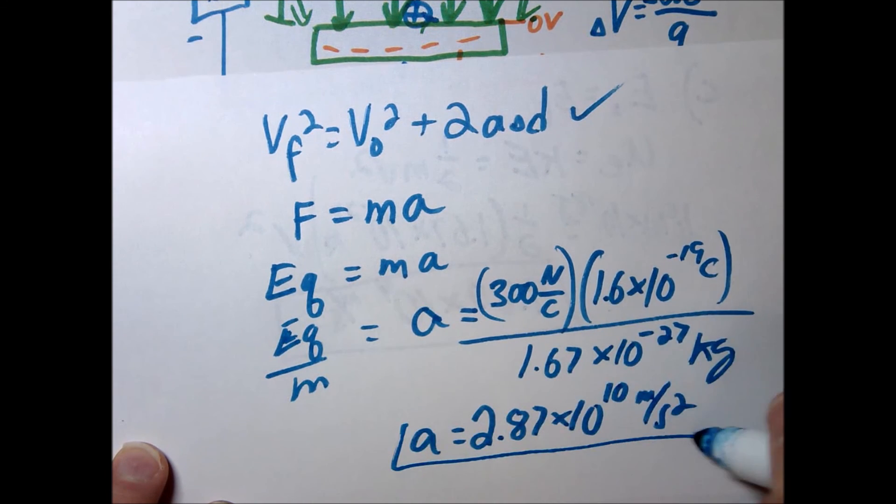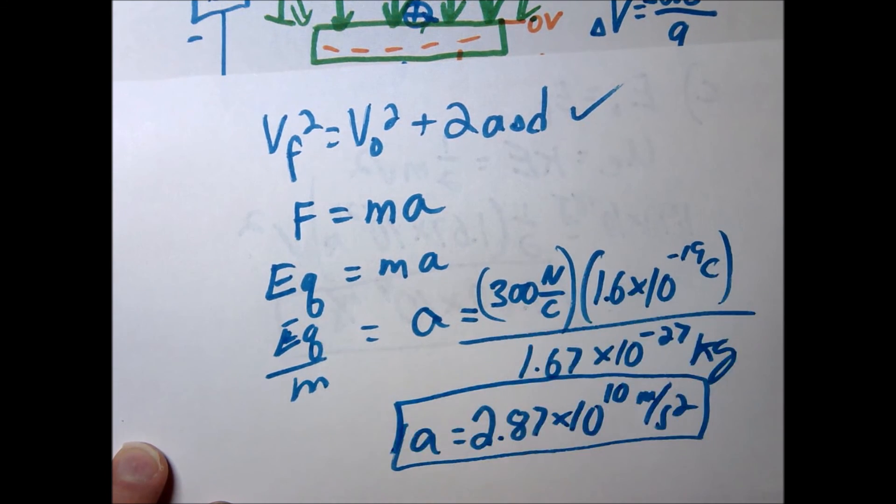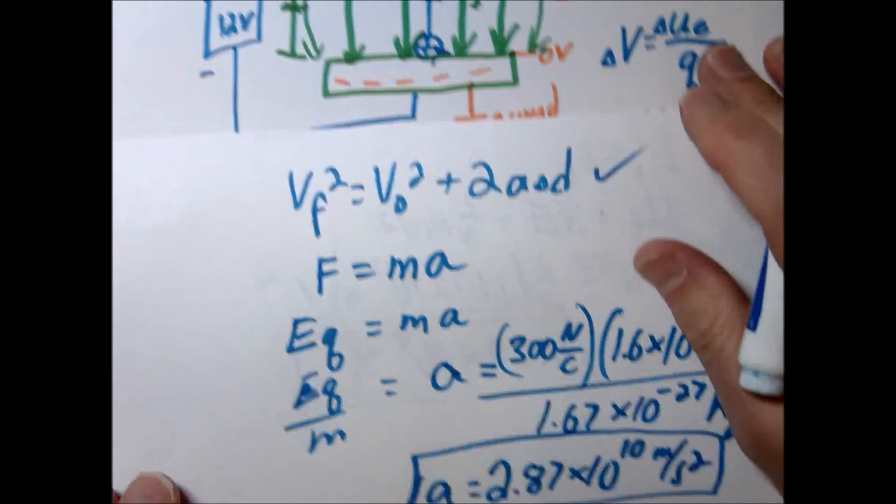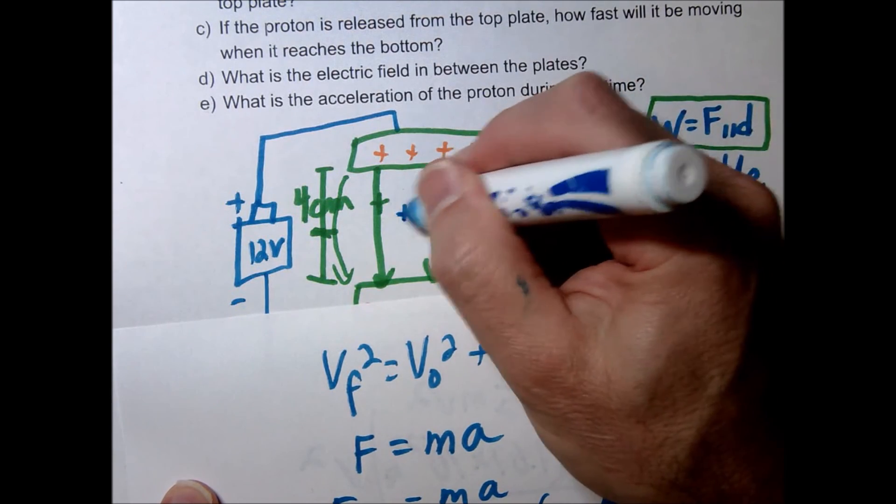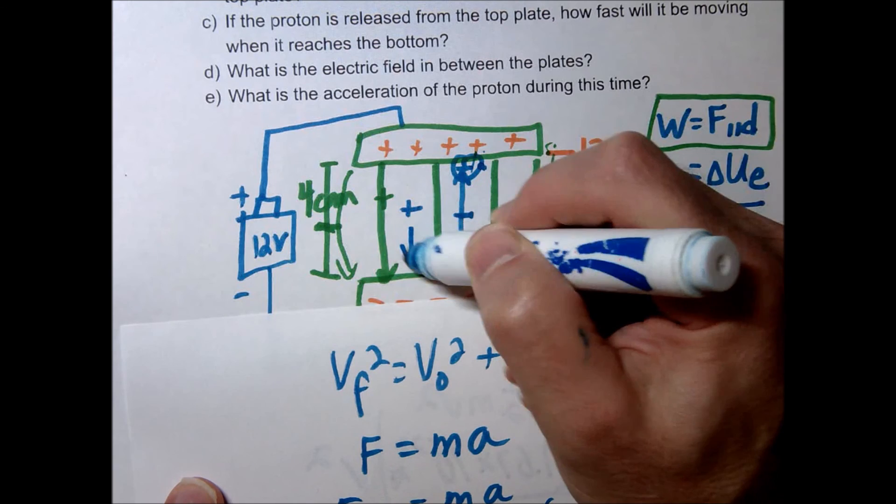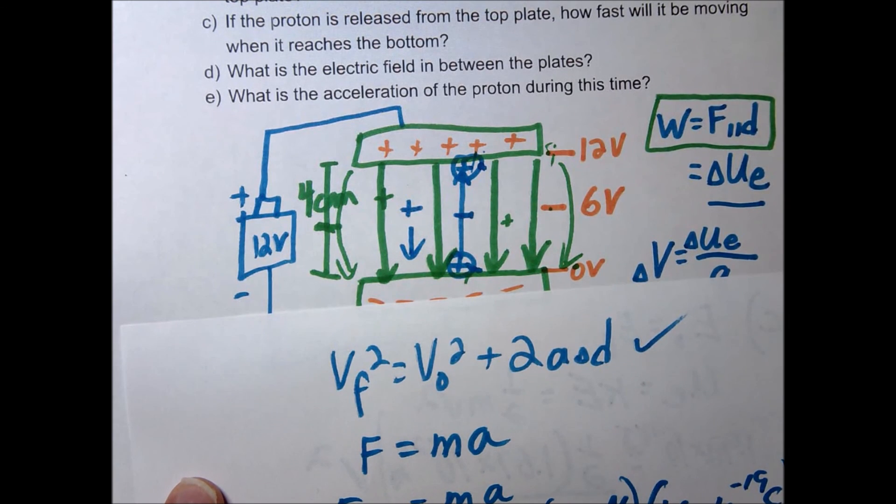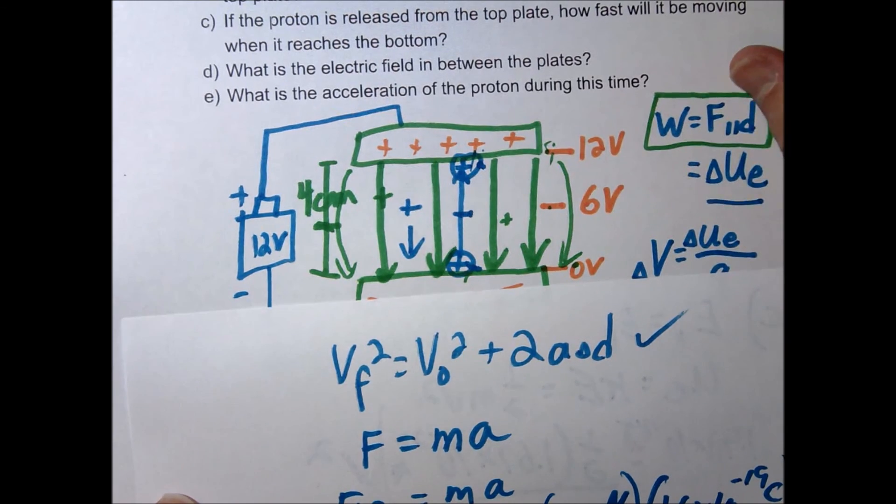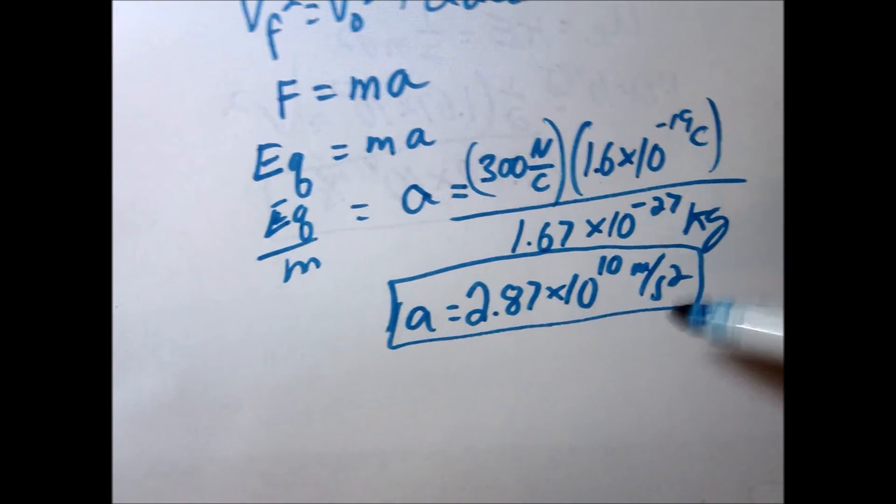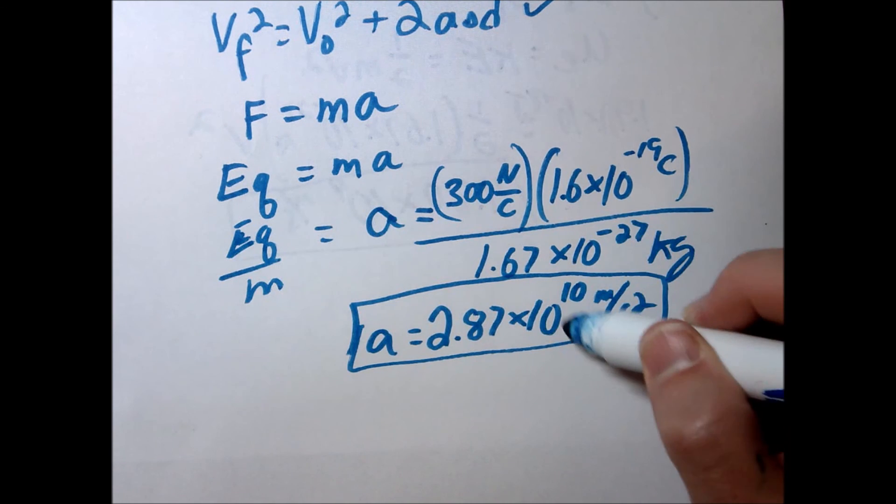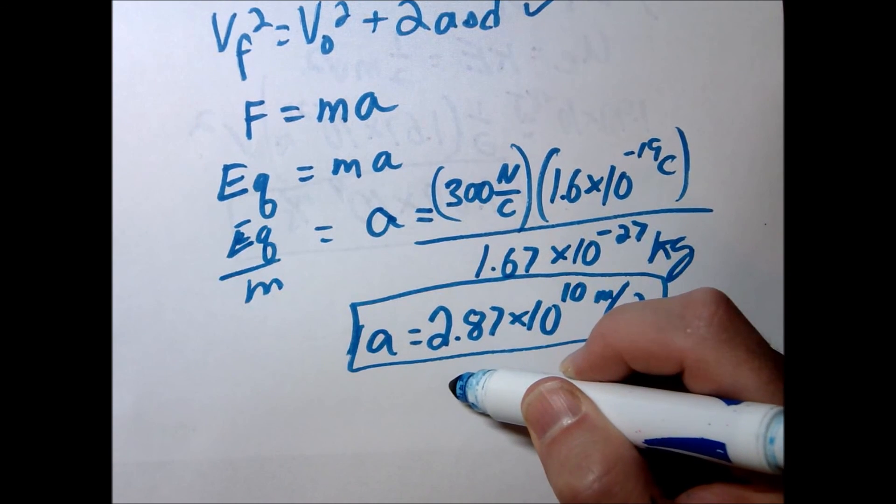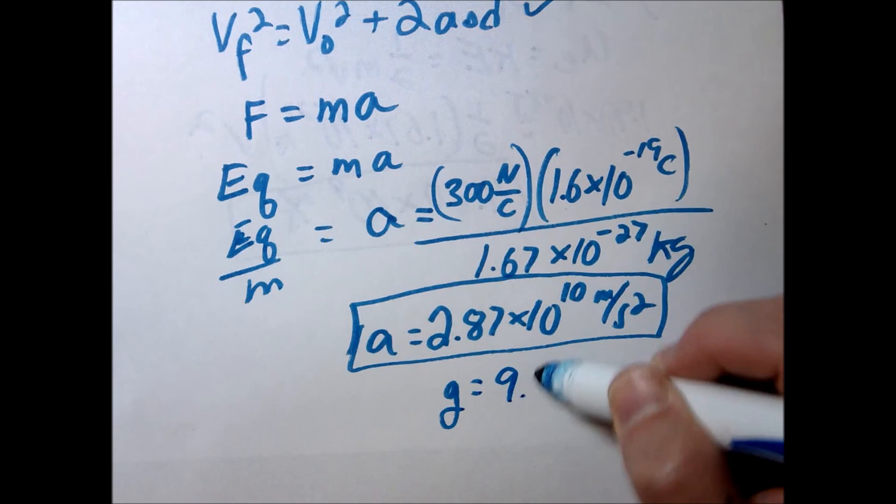Wow, check that out. So that is a huge acceleration. In fact, maybe you wondered to yourself at some point, how come if I just stuck a proton here and there were no plates, we would expect it to fall to the ground because of gravity, right? How come we've just kind of ignored gravity throughout this problem? Well, the answer to that is right here. The acceleration due to this electric field is 10 to the 10th. The acceleration due to gravity, if you remember, is 9.8.